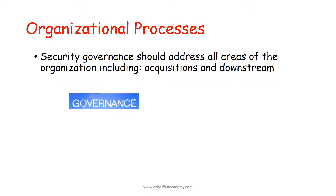Your security governance needs to address all areas of the organization, including acquisitions and downstream liabilities. For example, acquiring new software or merging with another business introduces new risk to your organization. Downstream liabilities include contractors — you need to evaluate the security posture of any contractors your organization employs.